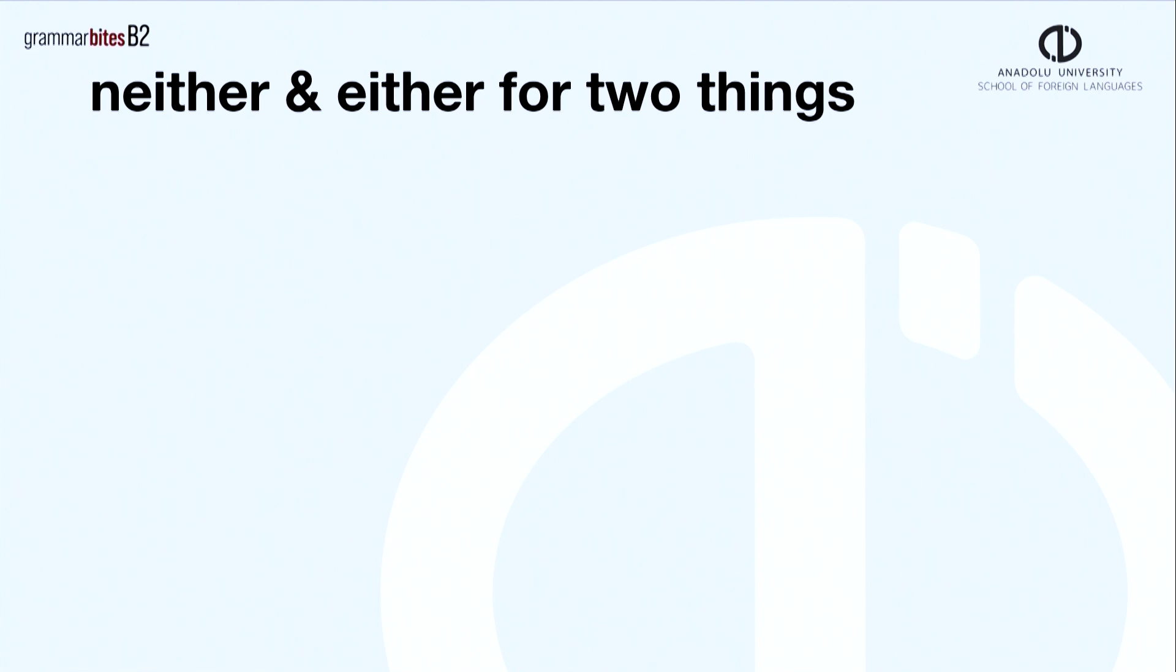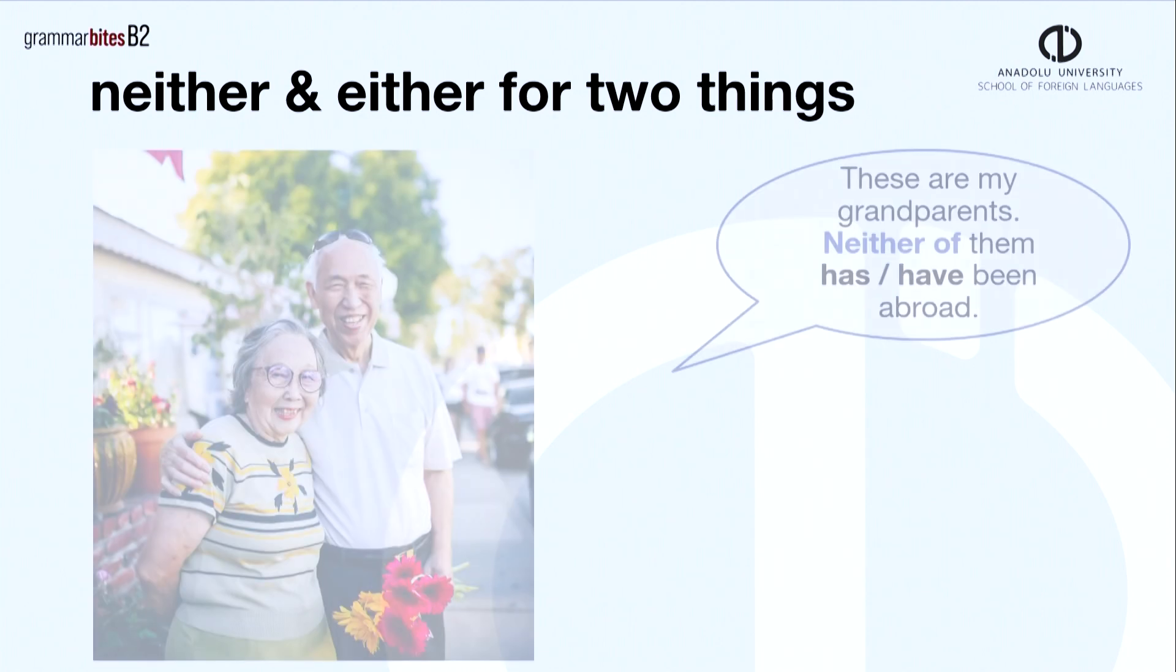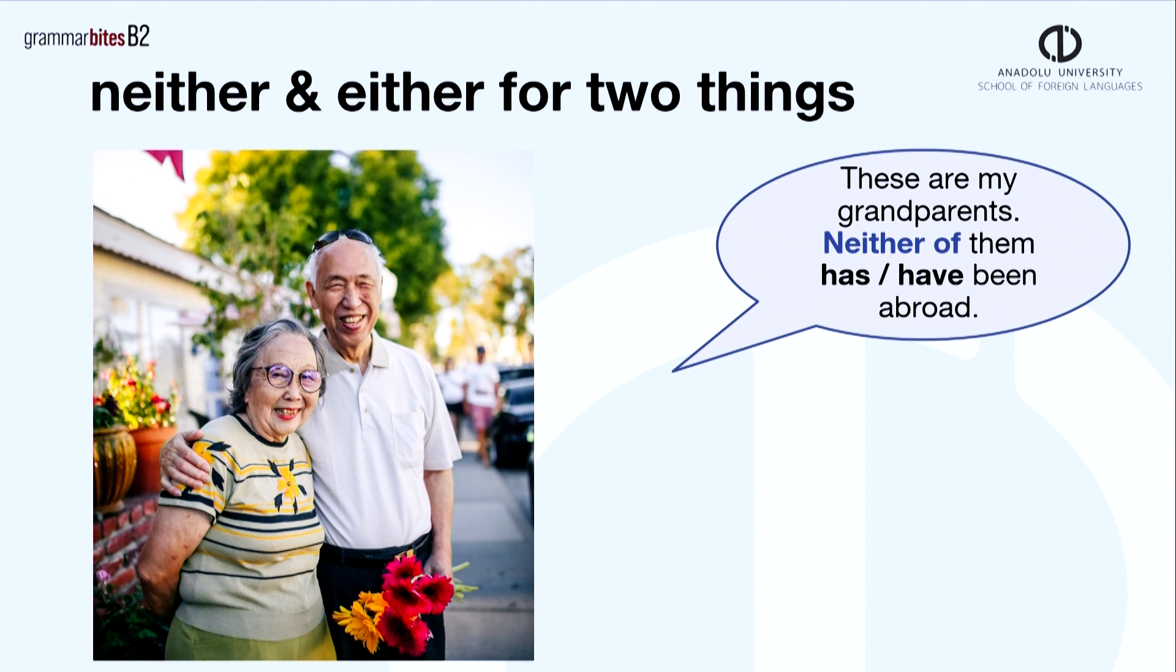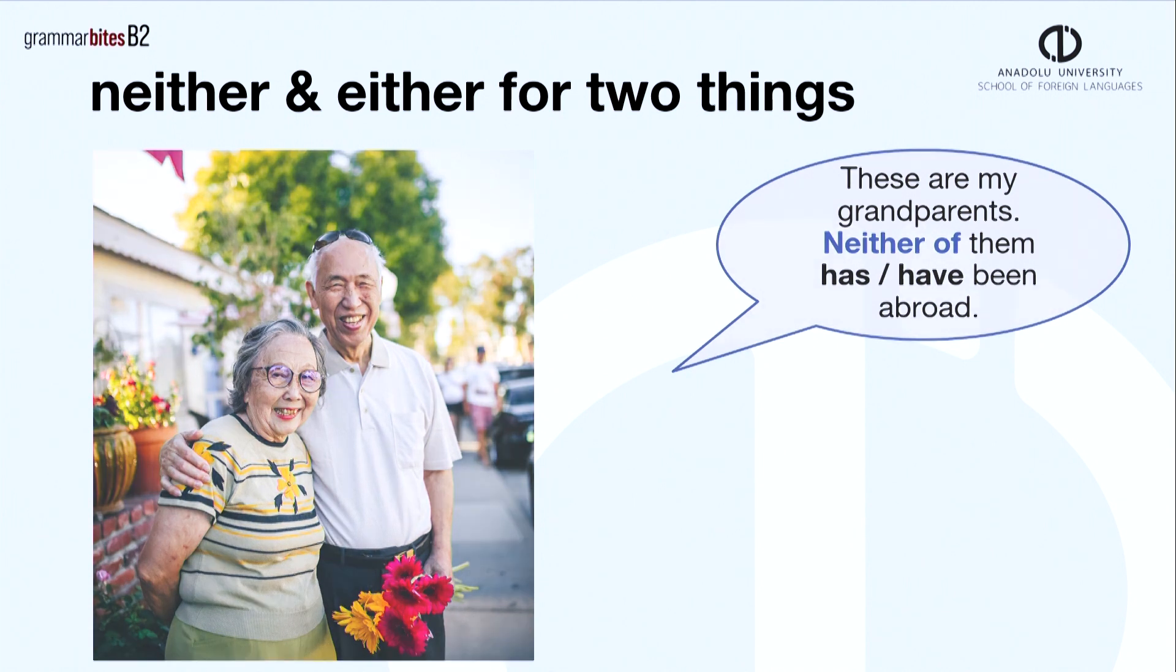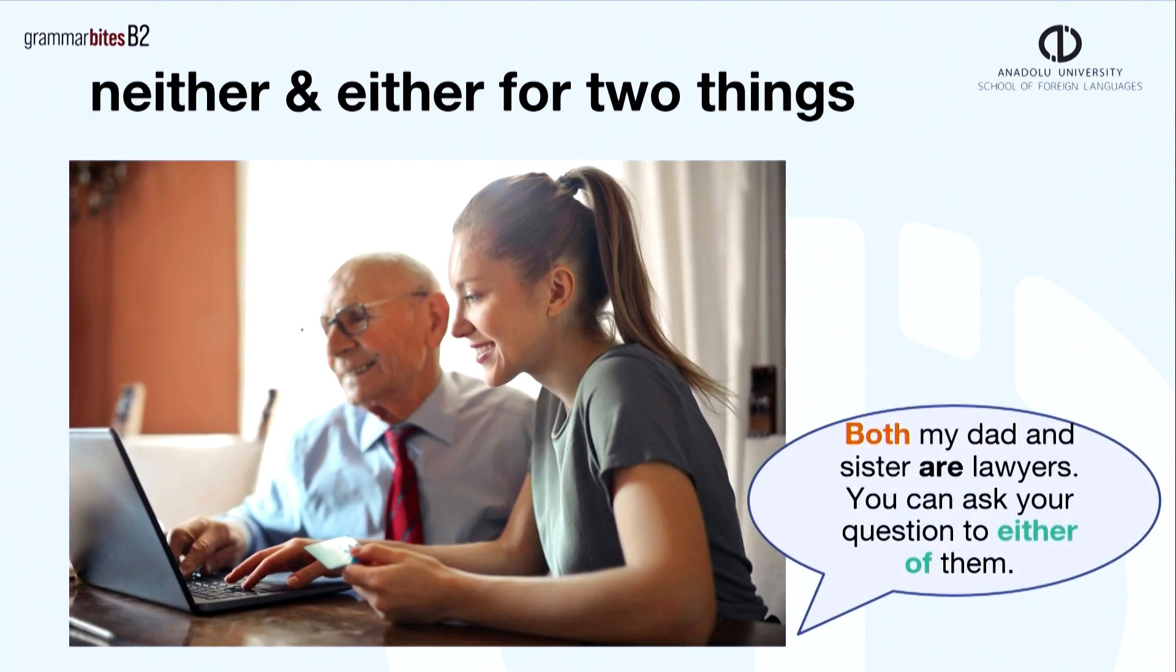Neither and either are used for two things. Note that either is positive, neither is negative. These are my grandparents. Neither of them has or have been abroad. Both my dad and sister are lawyers. You can ask your question to either of them.